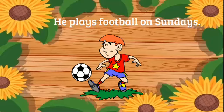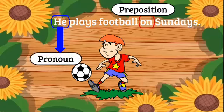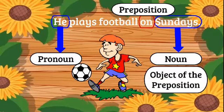Another example: He plays football on Sundays. Our preposition is on, connecting our pronoun, he, and our noun, Sundays, which is the object of the preposition — on Sundays. So that preposition connects he and Sundays. He plays football, our preposition on Sundays.